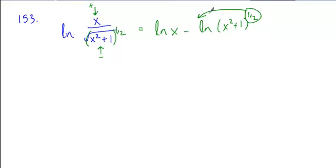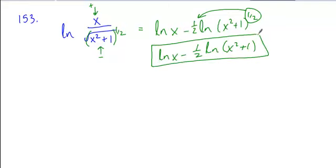I can then apply the property of pulling powers out of logs and into the front. And when I do, I get my final solution ln x minus one-half ln of x squared plus one.